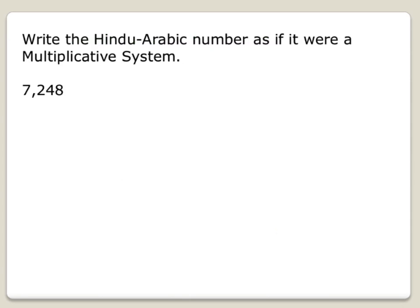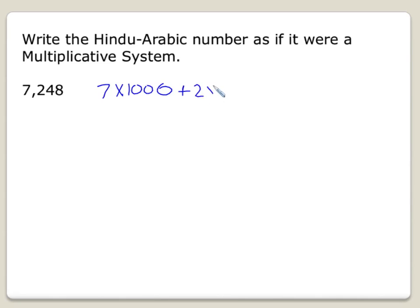We already have some concept of this. When we see the Hindu-Arabic numeral 7,248, we're actually saying the multiplication. If we were to write this as a multiplicative system, it would be 7 times 1,000, plus 2 times 100, plus 4 times 10, plus 8.